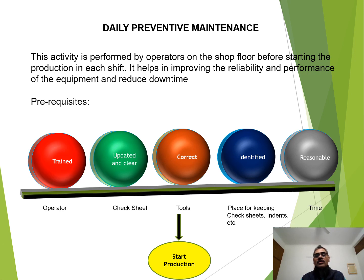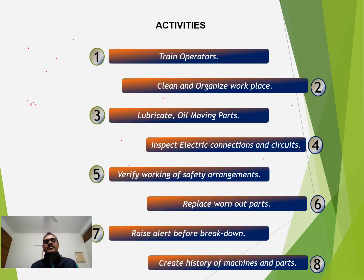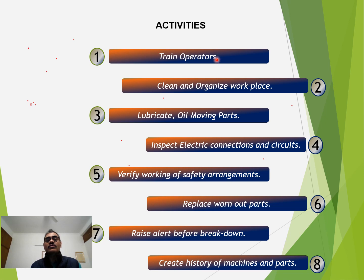Once we are checking all the points mentioned in the check sheet in daily preventive maintenance, we can start the production. The first activity is to train the operators — the points which the operator has to check on the machine, the operator has to be trained on those points.